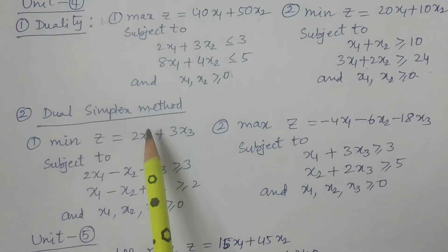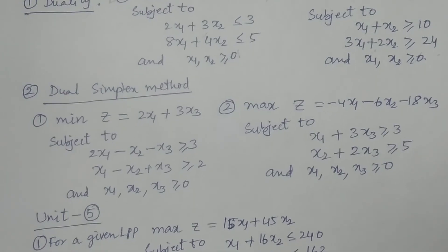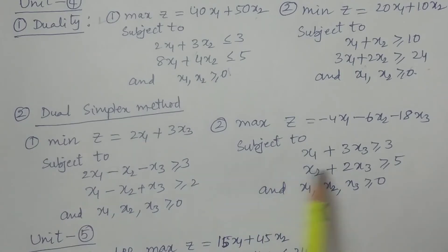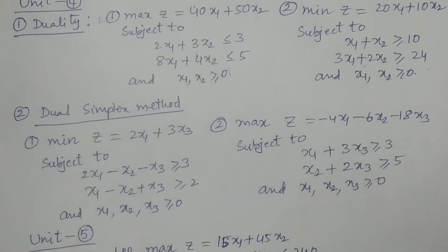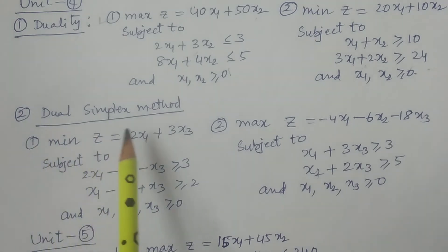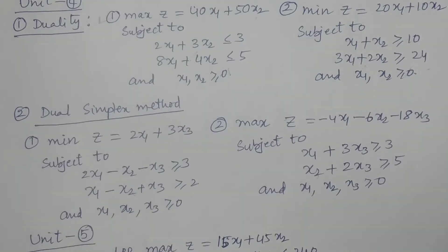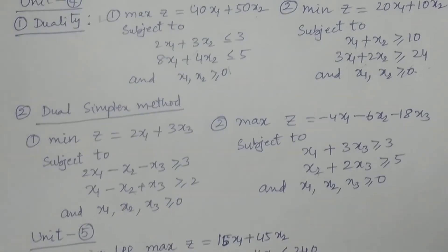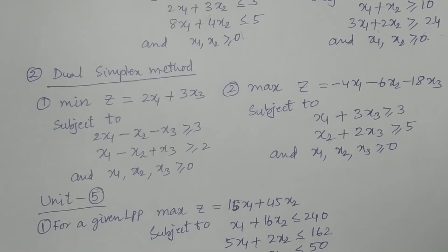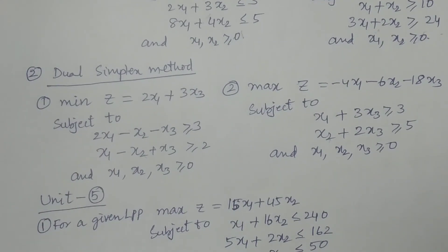The second method in Unit 4 is the dual simplex method. I have given two particular problems for this. It is a completely different procedure from the standard simplex method. My suggestion is that after the dual simplex procedure, you should also review Big M and two-phase once again, as students can get confused between these procedures.